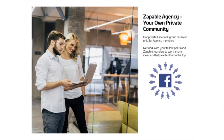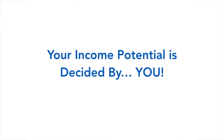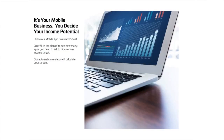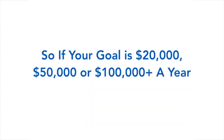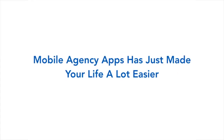Your income potential is decided by you. It's your mobile business, you decide your potential. We'll give you a mobile app calculator sheet — fill in the blanks to see how many apps you need to sell each month to hit a certain income target, and our calculator will help you calculate these. So if your goal is $20,000, $50,000, or $100,000 a year, Mobile Agency Apps has just made your life a lot easier.